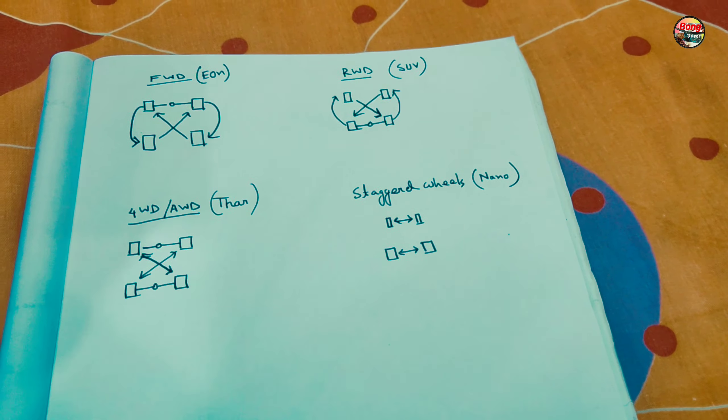For AWD, front left goes to rear right and rear left goes to front right. For the fourth type — staggered wheel setups like the Tata Nano — unfortunately we can't switch front tires with rear tires because the tire sizes are different. We can only switch side to side: front left goes to front right, and rear left only goes to rear right.